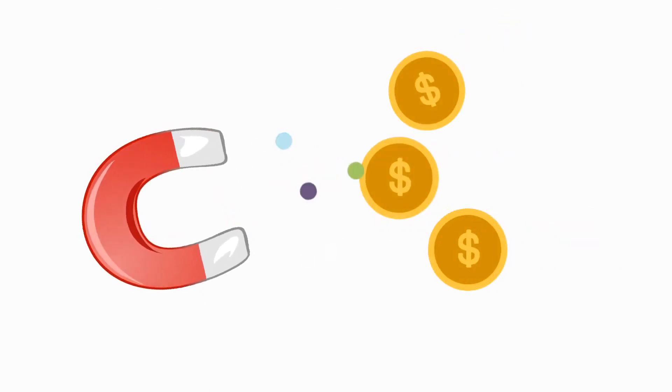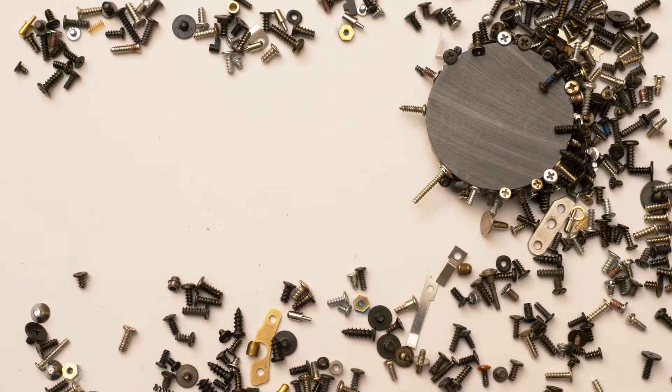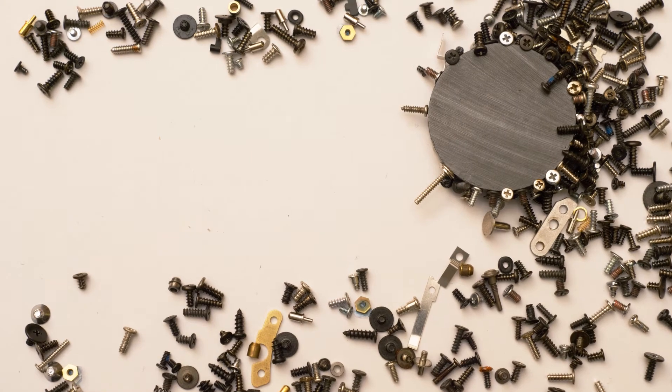Magnetic force: Bring a magnet near iron balls. The balls are pulled towards the magnet and stick to it. This invisible force that is set up between the magnet and the iron is called the magnetic force.